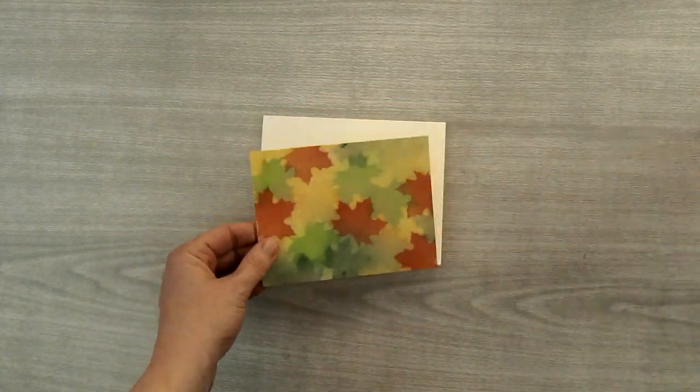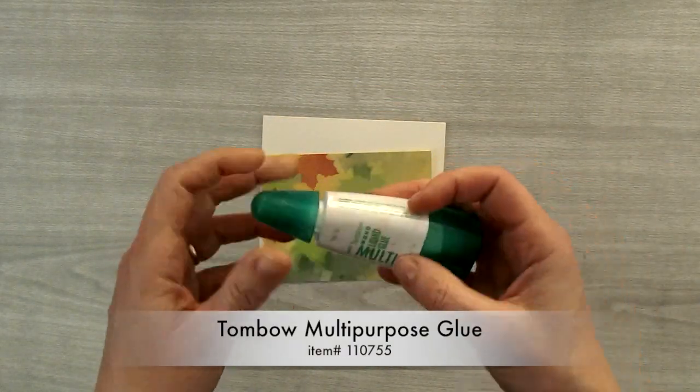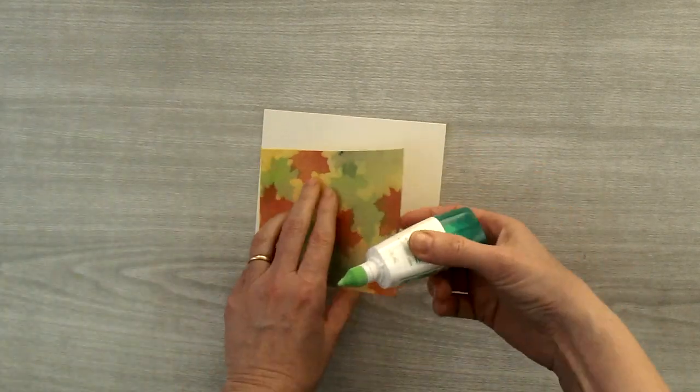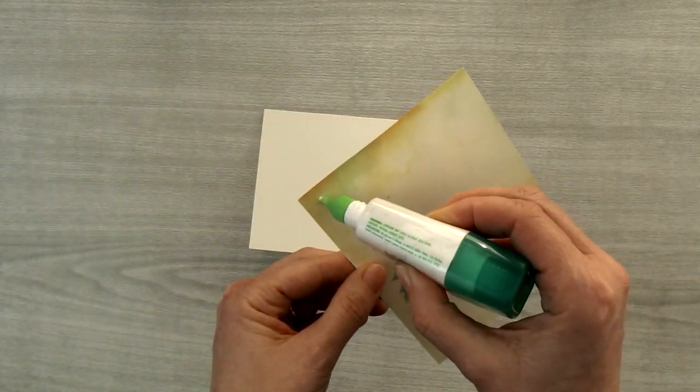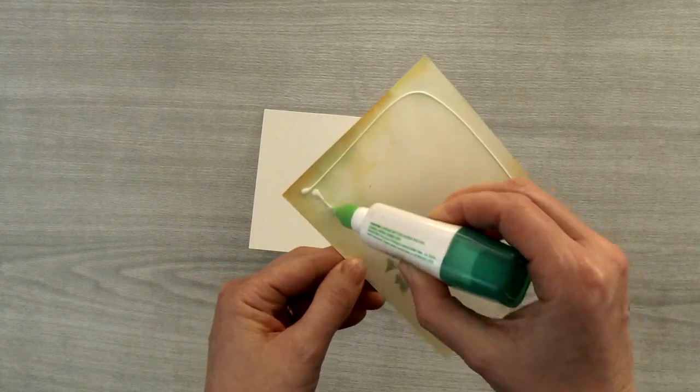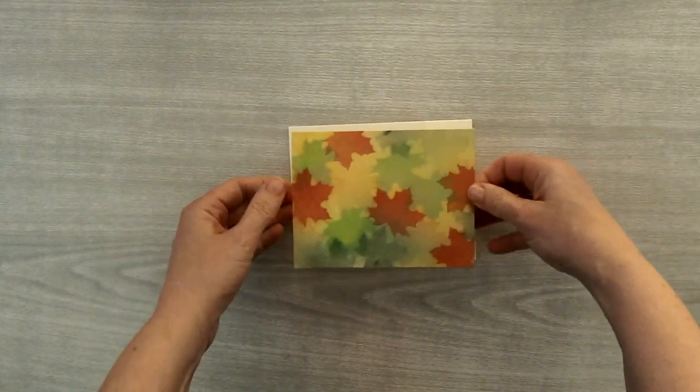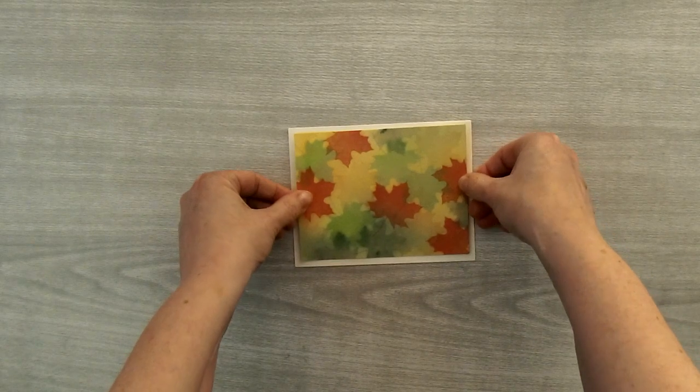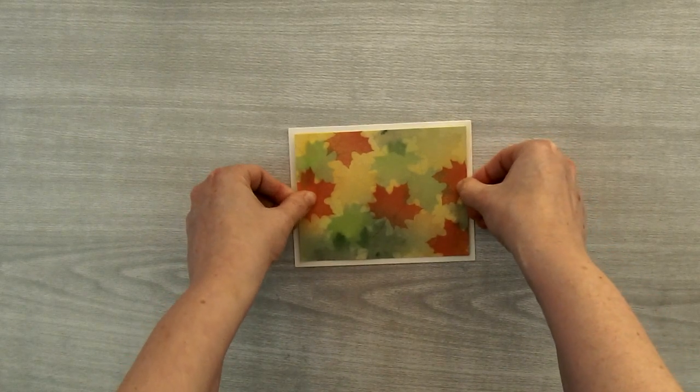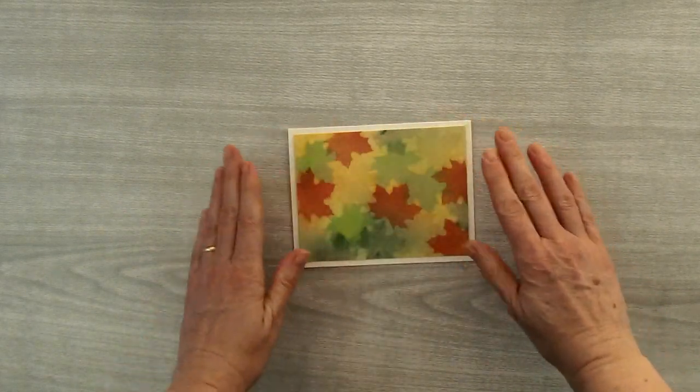Then you're going to take your piece and some Tombow multi-purpose glue. You're going to put some Tombow on the back of your watercolor washed piece and then you can add it to the front of the card as a layer. Just center it like that.